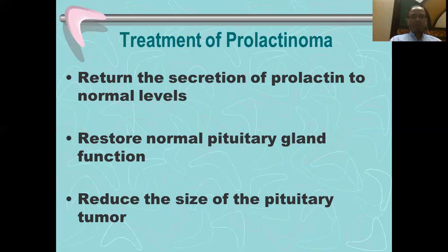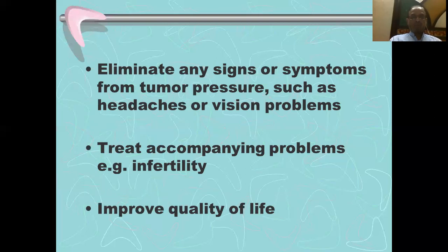Then, the treatment of prolactinoma. The objectives are to reduce the secretion of prolactin to normal levels, to restore normal pituitary function, and to reduce the size of the tumor, and to eliminate any signs or symptoms from tumor pressure such as headache or vision problems, to treat accompanying problems like infertility, and to improve quality of life. Dopamine D2 receptor agonists cause hypoprolactinemia.